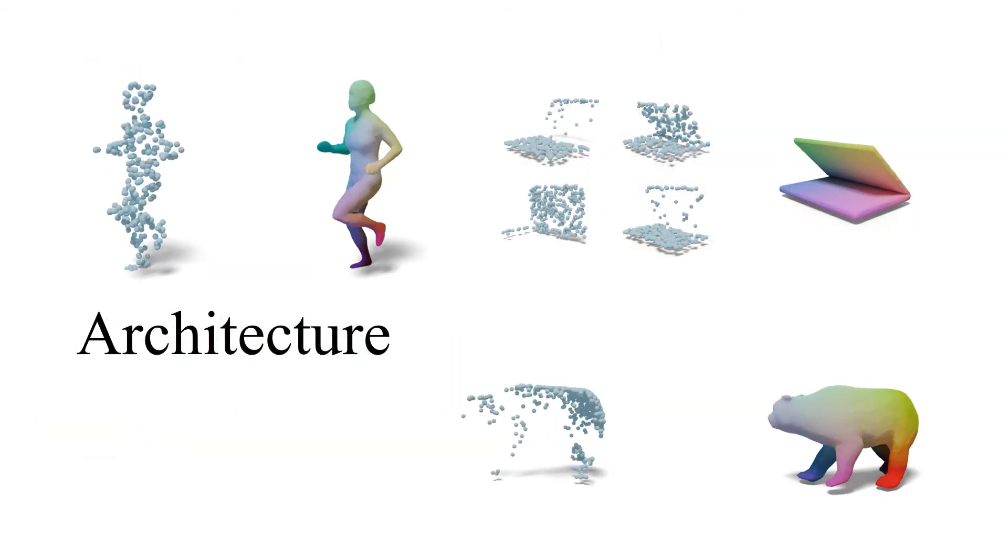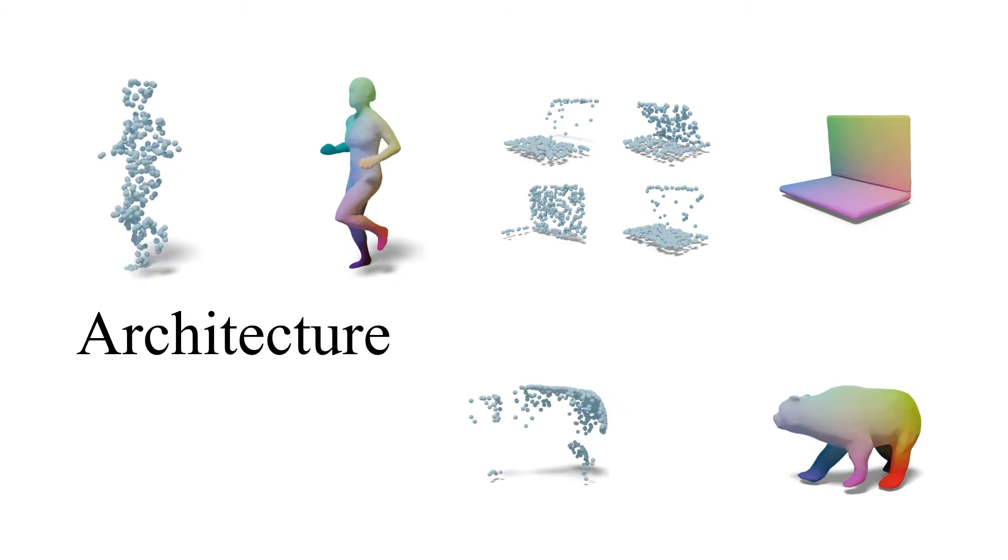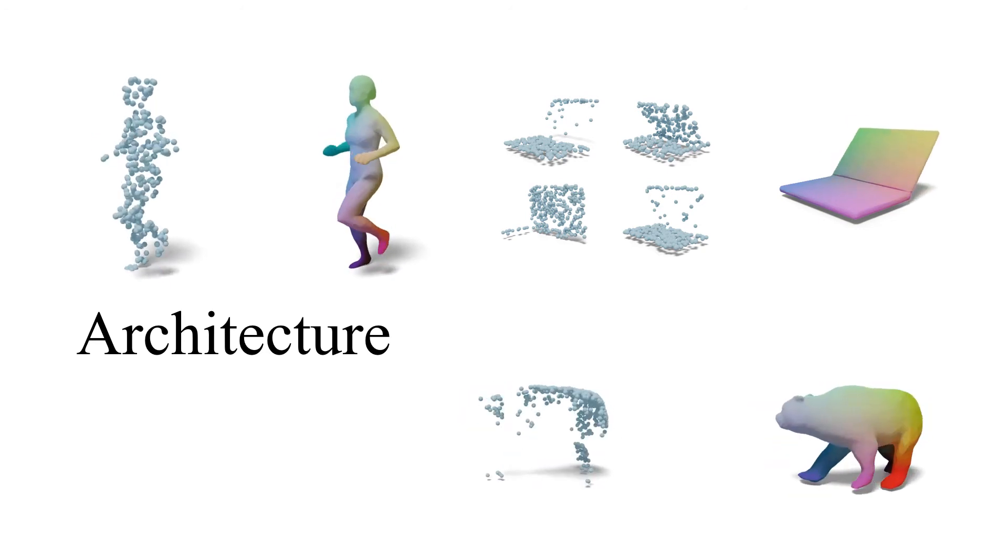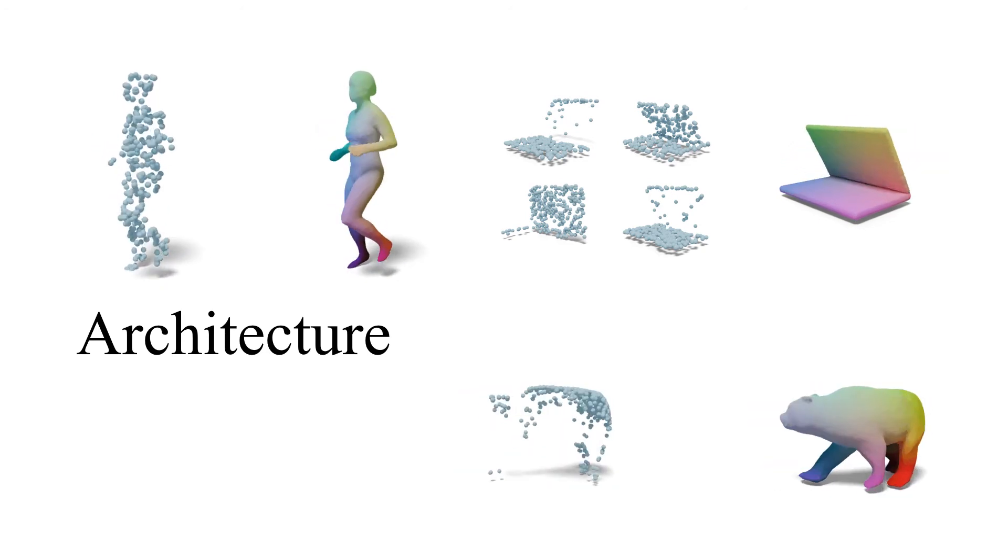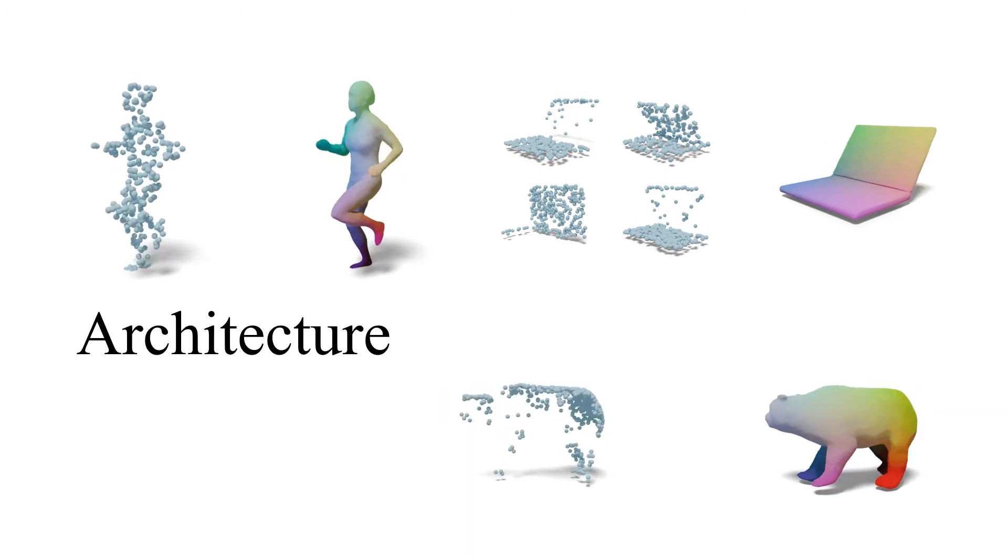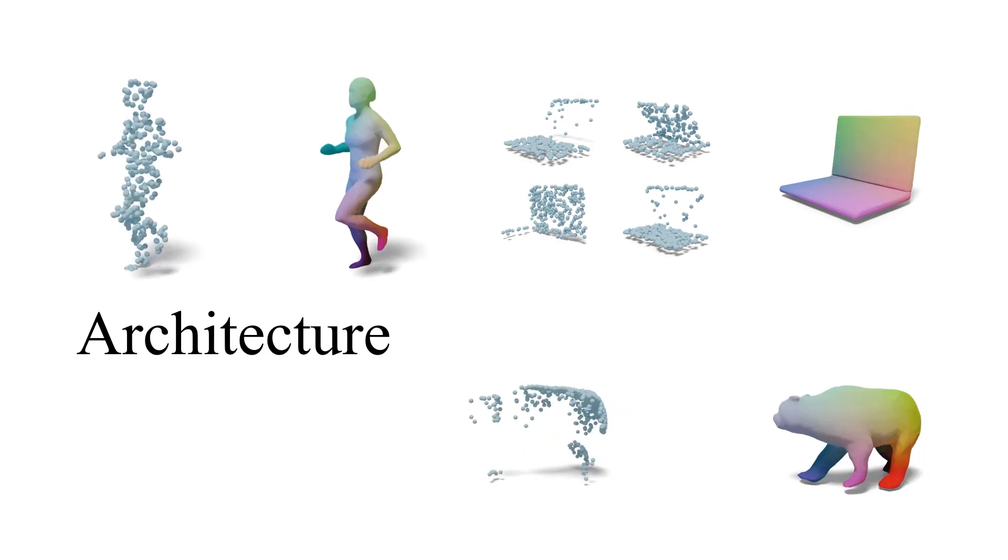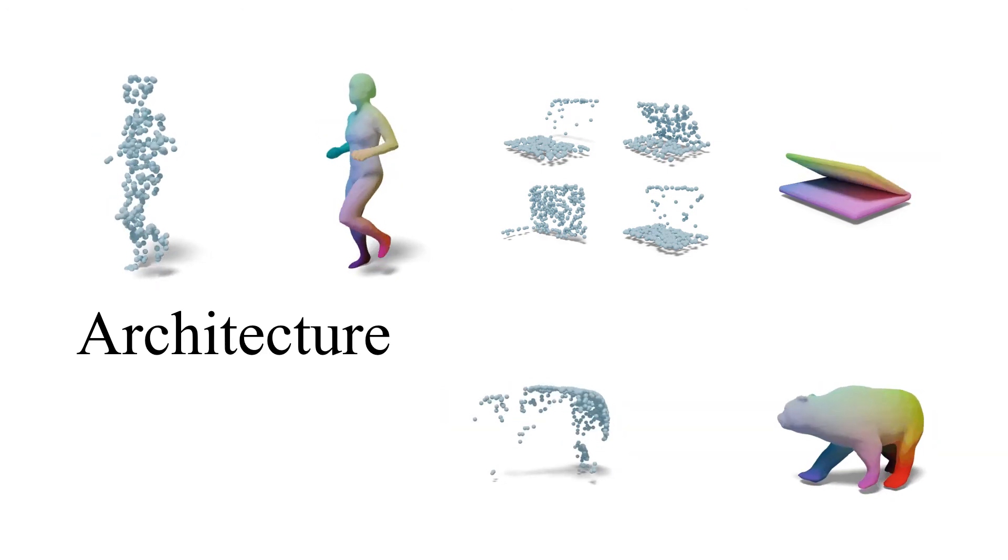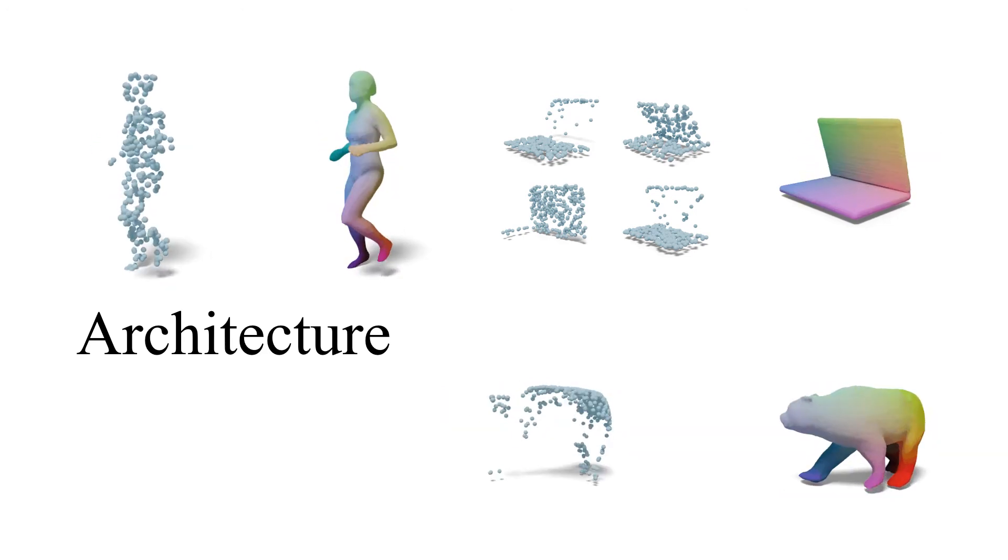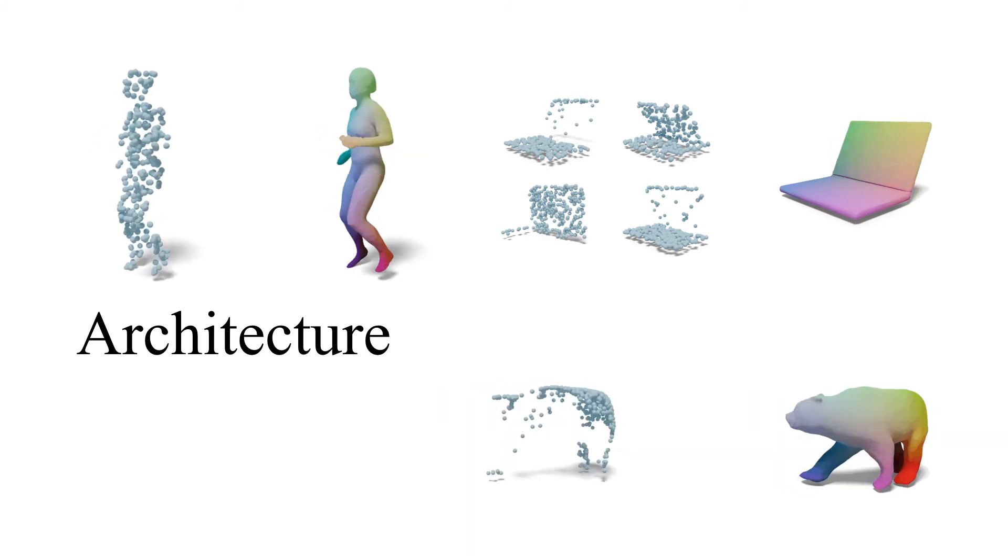Our architecture solves the dynamic surface reconstruction and correspondence tasks based on the proposed representation. The input of our model is a set or a sequence of the sparse or partial point clouds shown on the left, the output is the surface reconstruction as well as the dense correspondence shown on the right with correspondence encoded as colors.